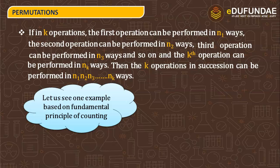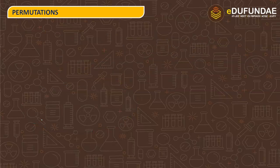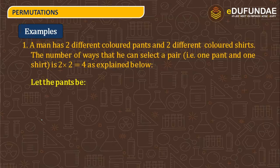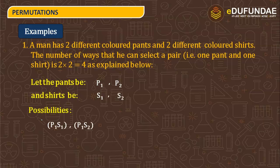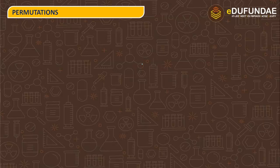Let us see one example based on the fundamental principle of counting. A man has two different color pants and two different color shirts. The number of ways he can select a pair — one pant and one shirt. The pants are P1, P2 and the shirts are S1, S2. The possible combinations are P1S1, P1S2, P2S1, P2S2. The total number of combinations is 4, which equals 2 into 2 by the product rule.